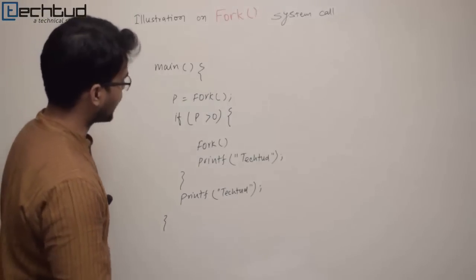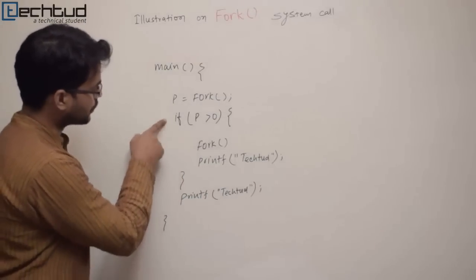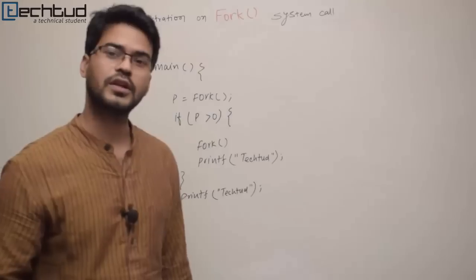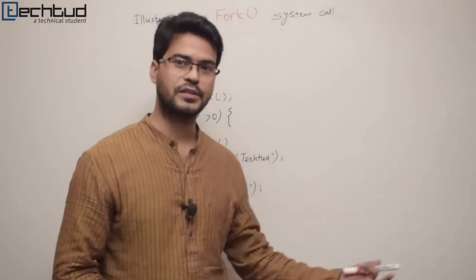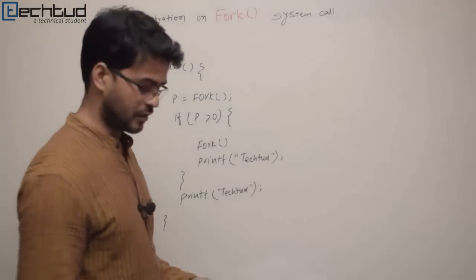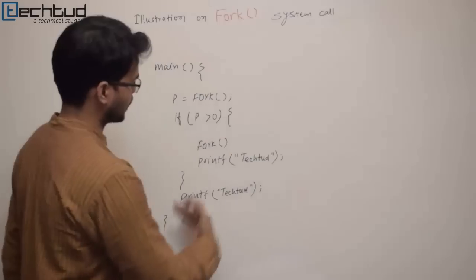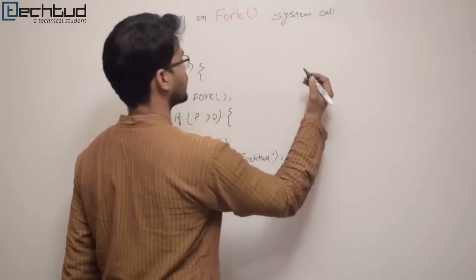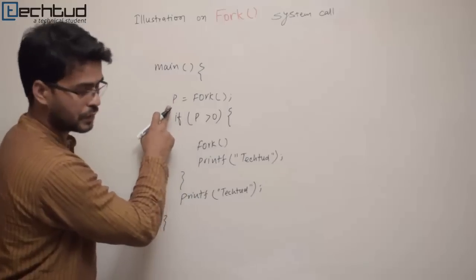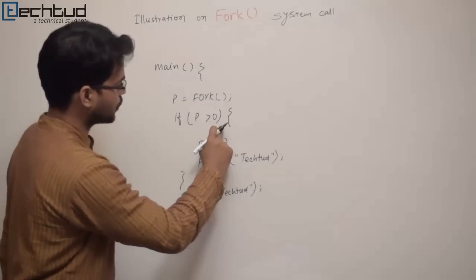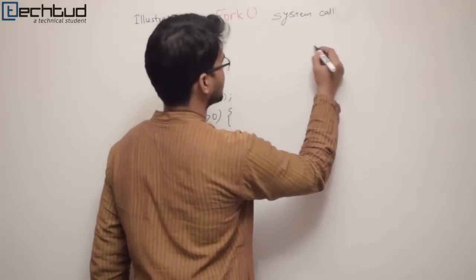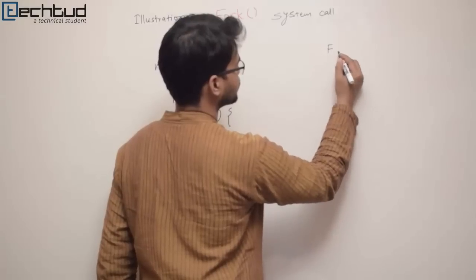This is a piece of code given and we have two fork calls — one of them has been wrapped into a condition. The key point we were talking about: fork returns the process ID to the parent but returns zero to the child. That will be used here. So first, this main function has a fork call, whatever is returned is stored into p, and then it is compared whether p is greater than zero — if yes then another fork call, otherwise a print statement.